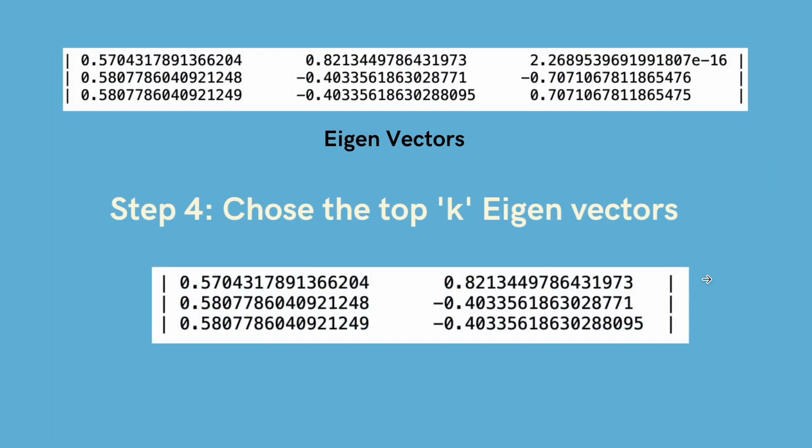Next what we'll do is we'll choose the top k eigenvectors. After the eigenvalues we'll also calculate the eigenvectors and we'll choose the top k eigenvectors. We'll arrange them in ascending order and choose the top k eigenvectors.